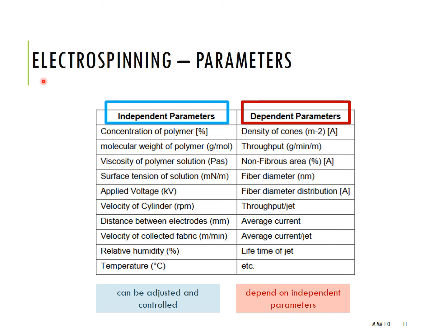Electrospinning may seem simple, but the theory behind it is complicated, and there are many independent and dependent variables that should be taken into account. Independent parameters such as solution concentration and applied voltage can be adjusted and controlled individually. But dependent parameters such as the lifetime of the jet depend on these independent parameters. You need to do a lot of work in the lab to understand how this works for different solutions and materials.